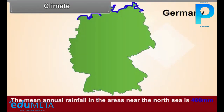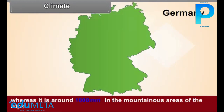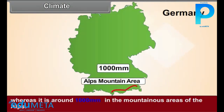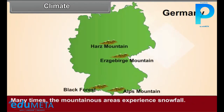The mean annual rainfall in the areas near the North Sea is 400 mm, whereas it is around 1,000 mm in the mountainous areas of the Alps. Many times, the mountainous areas experience snowfall.